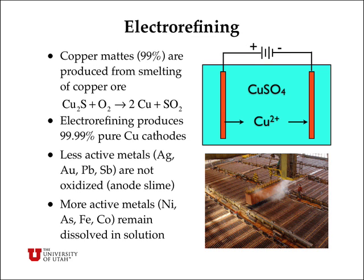We can also talk about electrorefining, and copper is a good example. Copper ore is largely copper sulfide, and that can be reacted with oxygen to produce copper metal in things called mats, which are about 99% pure. We can stick those mats into a solution of copper sulfate, and by running a current between the anode and the cathode, we can oxidize the copper from the copper mat to copper 2-plus ions, and then reduce them again to copper metal at the cathode. Less active metals like silver, gold, lead, and antimony are not oxidized because copper is more easily oxidized, and that produces something called anode slime which simply drops to the bottom of the tank and can be separated.